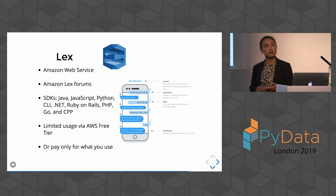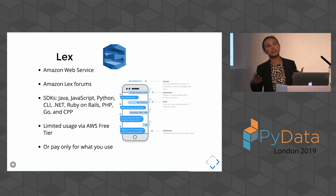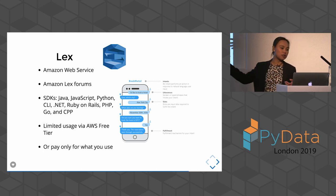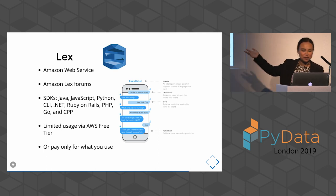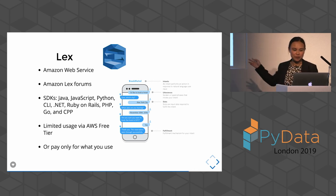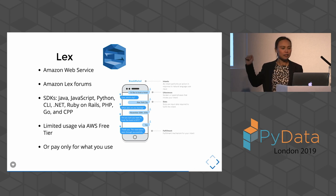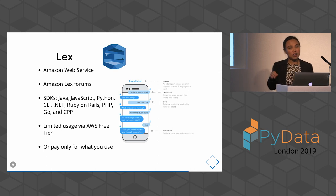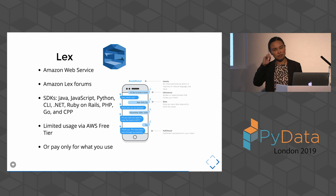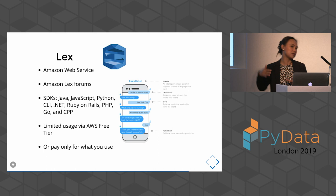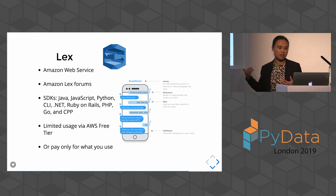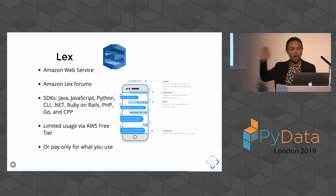Lex is another similar service to Dialogflow and Watson, provided by Amazon Web Services. If you are already using their cloud services, you could consider integrating Lex as well. They have lots of SDKs — and while I assume everybody here uses Python, if you prefer to build your chatbot with other languages, you can use that too. They have a forum for questions. Like most Amazon Web Services, they provide a free tier. If you sign up for the first year, you can use Lex for limited usage up to a certain point per month, but if you build it for your company you'll pay based on usage.